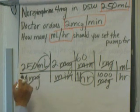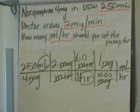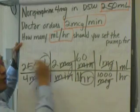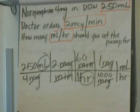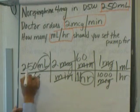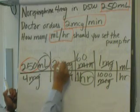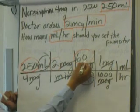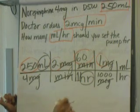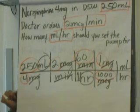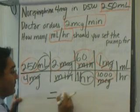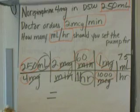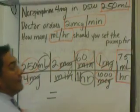Now all we're left with is the two factors we circled and a whole bunch of numbers. On your calculator, input: 250 times 2 times 60 — don't even press the equal sign — times 1, divided by 4, divided by 1,000. That equals 7.5. So our answer is 7.5 mL per hour. We would set the pump for 7.5 mL per hour. With dimensional analysis, we're cross-canceling out all the things we don't need and keeping the things we do need.